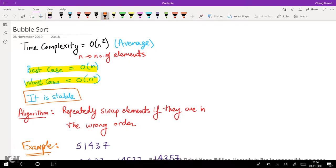So let's look at its algorithm. Its algorithm says repeatedly swap elements if they are in the wrong order. It's as simple as that.